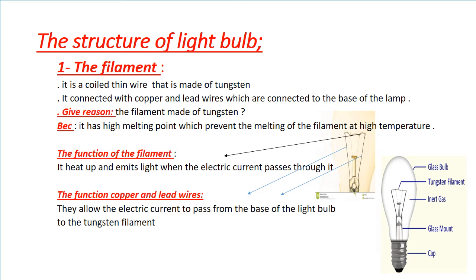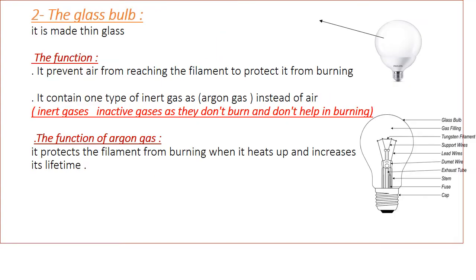The cover and lead wires allow the electric current to pass from the base of the light bulb to the tungsten filament. Part two, the glass bulb. The glass bulb is made of thin glass. It contains a type of inert gas called argon gas. The argon gas doesn't burn and doesn't help in burning. Argon gas protects the filament from burning and increases the lifetime of the light bulb.